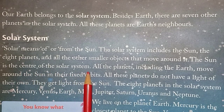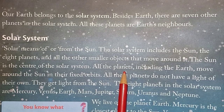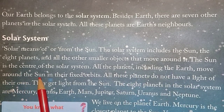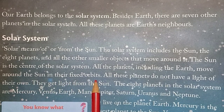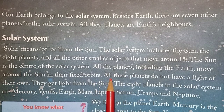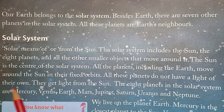The Sun is the center of the solar system — you can say the Sun is the leader. All the planets, including the Earth, move around the Sun in their fixed orbits. The Earth and the seven other planets continuously revolve around the Sun on a fixed path, which is known as an orbit.